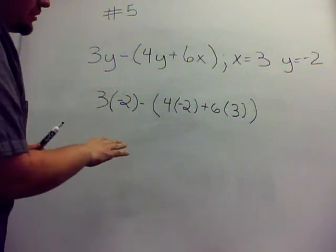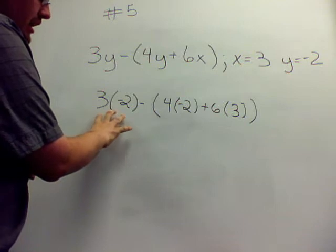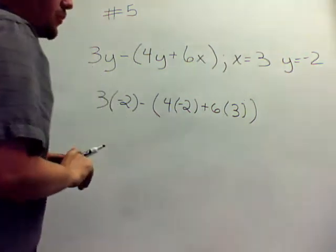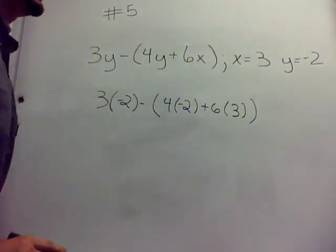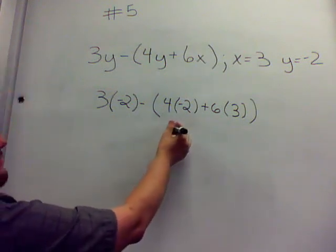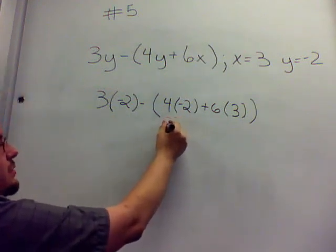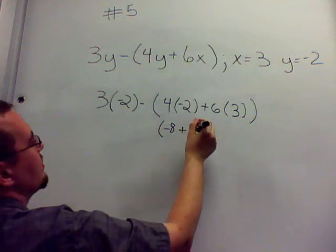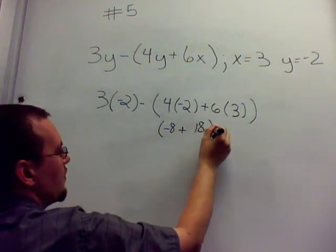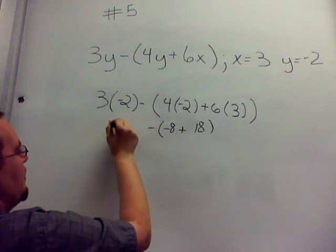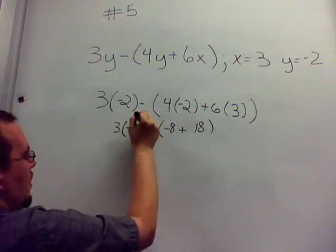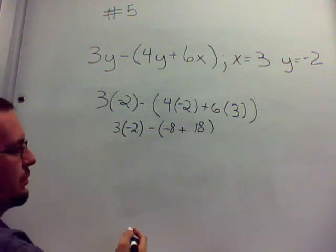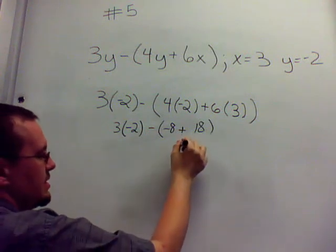First, we need to do the parentheses. This is a parentheses over here, but it's not a quantity, it's actually a multiplication. What we're looking for is a quantity when there's more than one term inside parentheses. So 4 times negative 2, which is negative 8, plus 6 times 3, which is 18. There's still two terms in here, so negative 8 plus 18 is positive 10.